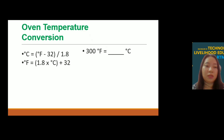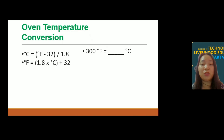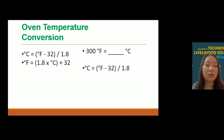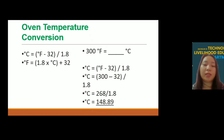Here are the formulas for oven temperature conversion. Degrees Celsius = (degrees Fahrenheit − 32) ÷ 1.8. Degrees Fahrenheit = (1.8 × degrees Celsius) + 32. Example: 300°F equals how many degrees Celsius? Using the formula: °C = (300 − 32) ÷ 1.8 = 268 ÷ 1.8 = 148.89°C.